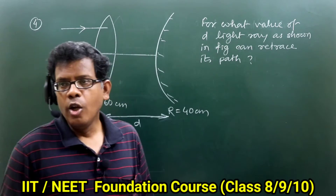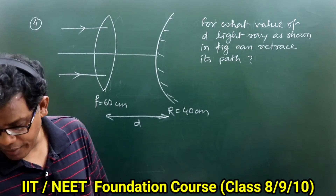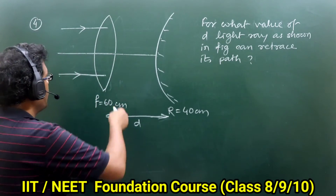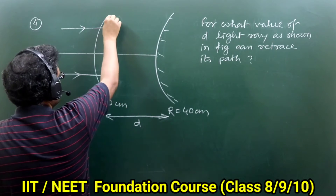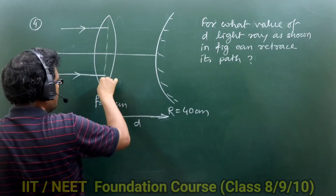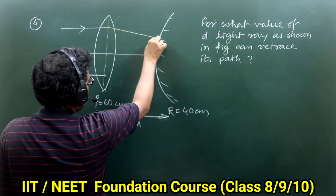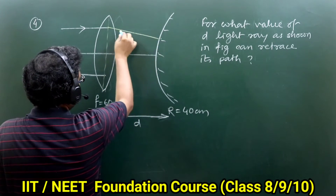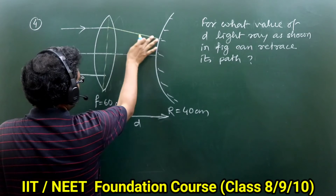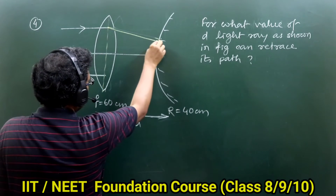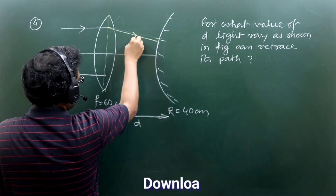The light ray falling on the convex mirror should be at normal incidence. This should be the condition for the ray diagram.